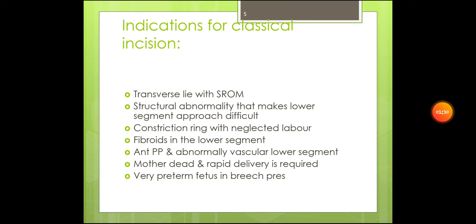What are the indications for a classical cesarean section? These include transverse lie with spontaneous rupture of membranes, structural abnormality that makes lower segment approach difficult, constriction ring with neglected labor, fibroids in the lower segment, anterior placenta previa, abnormally vascular lower segment, mother dead and rapid delivery is required.